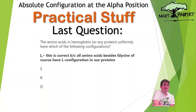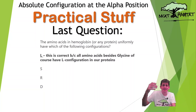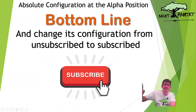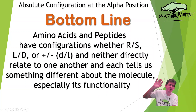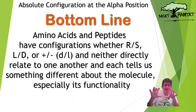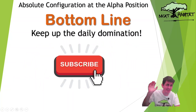If the question said 'sugars in our body uniformly have which configuration,' the answer would be D. Amino acids are L; sugars are D. Now, sugars and amino acids both can have R or S depending on the arrangement of atoms about their chiral centers. Bottom line: amino acids and peptides have absolute configurations at the alpha position and at other positions as well. But whether they are R, S, L, D, plus or minus — these don't necessarily relate to each other. You can have an R which is D which is minus, or an S that's D and minus. Each one tells us something unique about a molecule, especially how that molecule functions in nature.